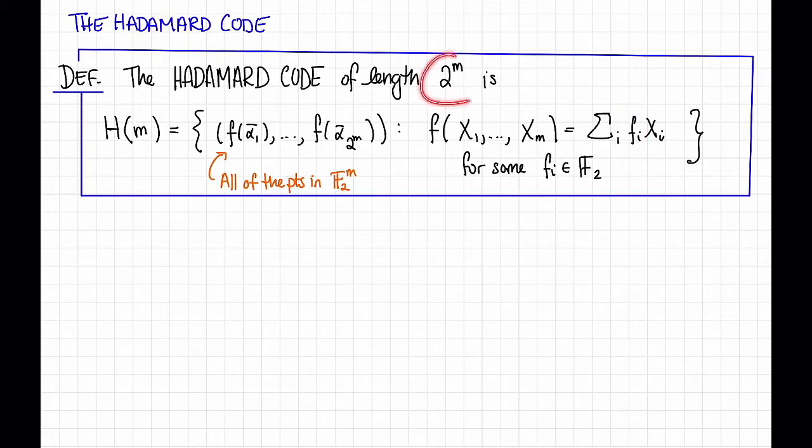The length of the code is 2 to the m, because there are 2 to the m such evaluation points, and so the rate of this code is m divided by 2 to the m, which is notably pretty small.